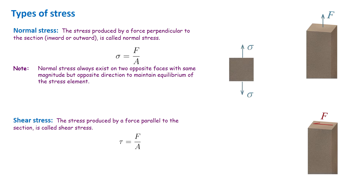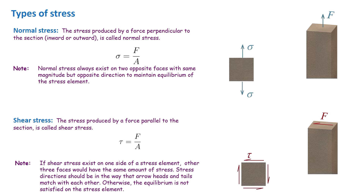Normal stress always exists on two opposite faces with the same magnitude but opposite direction in order to maintain equilibrium of the element. In a similar way, if shear stress exists on one side of the stress element, the other three faces would have the same amount of stress. Stress directions should be such that arrowheads and tails match with each other, otherwise equilibrium is not satisfied on the stress element.